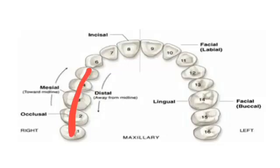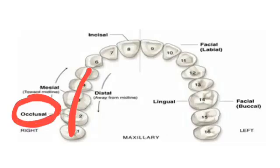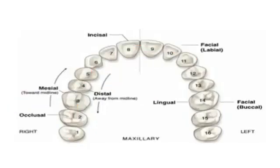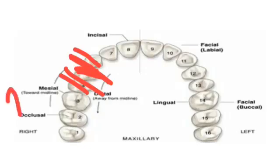The surface of the posterior tooth which comes in contact with the same surface of the similar tooth of the opposite jaw during occlusion is called the occlusal surface. This surface is not included in case of anterior teeth — in anterior teeth it is called the incisal edge. A tooth comes in contact with the teeth beside it through two surfaces called proximal surfaces.